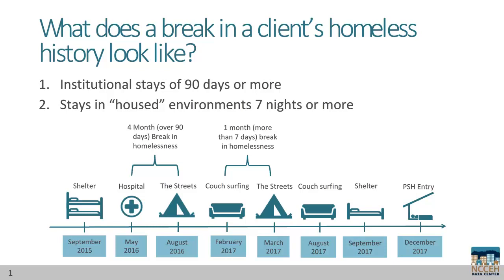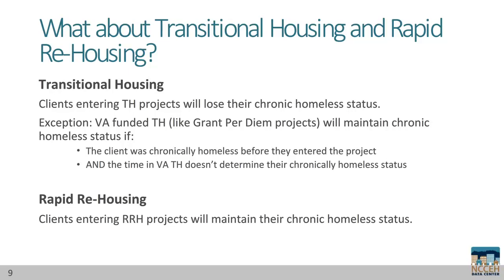So far, we have not mentioned transitional housing or rapid rehousing. Transitional housing does not count towards a chronic homeless history. If clients enter transitional housing projects with chronic homeless status, they will lose that status. The exception is VA-funded transitional housing like Grants Per Diem or GPD projects — clients maintain their status if they enter qualifying as chronically homeless. Clients entering rapid rehousing projects with chronic homeless status will still be eligible for PSH; however, their time in rapid rehousing projects cannot contribute to their homeless history.